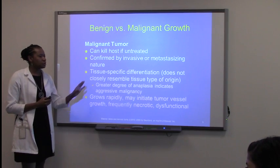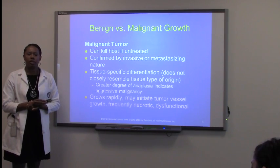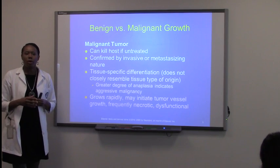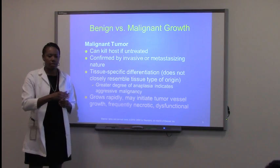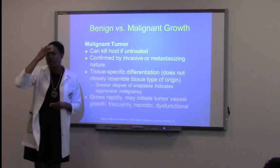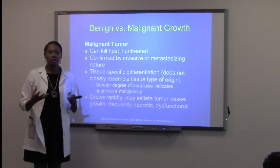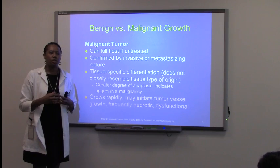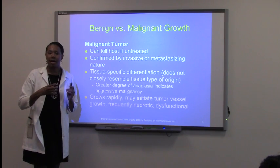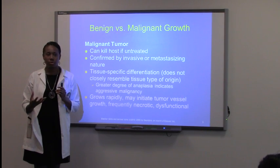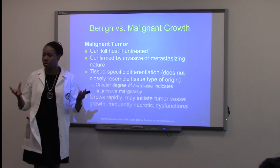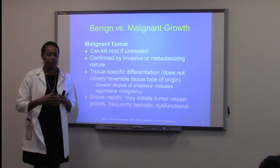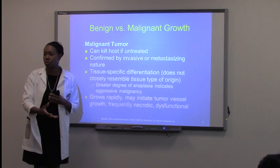For malignant tumors, they do have a chance to be invasive and also to metastasize. One thing about tumor growth — in order for anything to grow, just like any tissue in the body, it needs vascular supply. Benign tumors do not have a high vascular supply, but malignant tumors do. Hence the reason why malignant tumors can grow larger in size, and by having more vascular channels, they allow this type of cancer to spread.